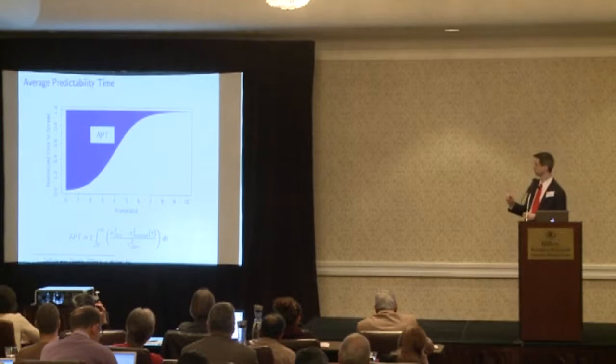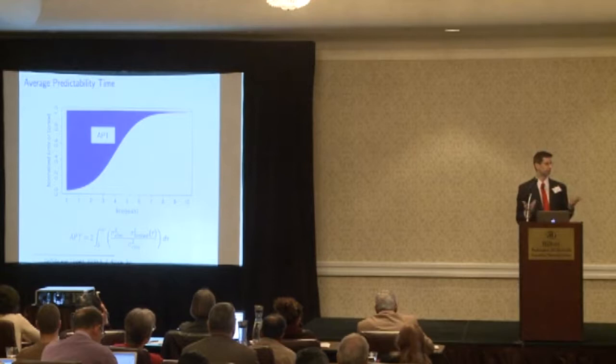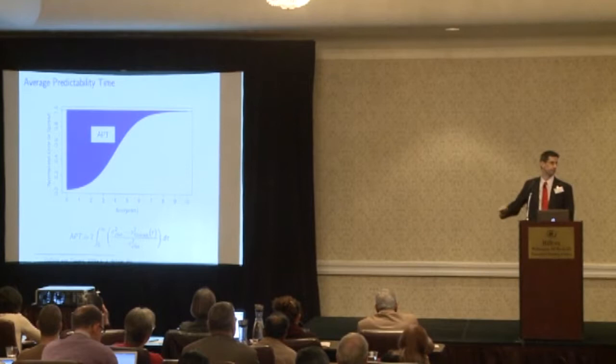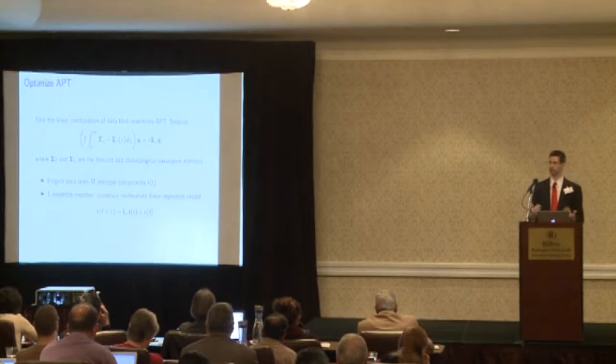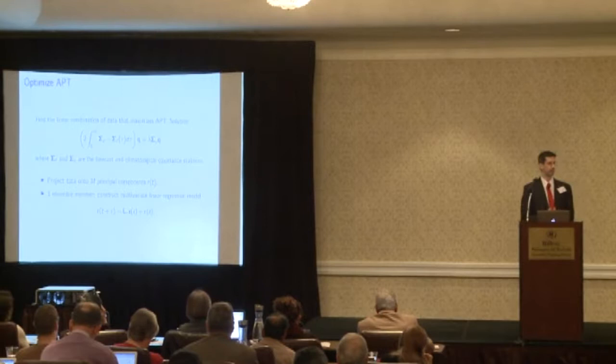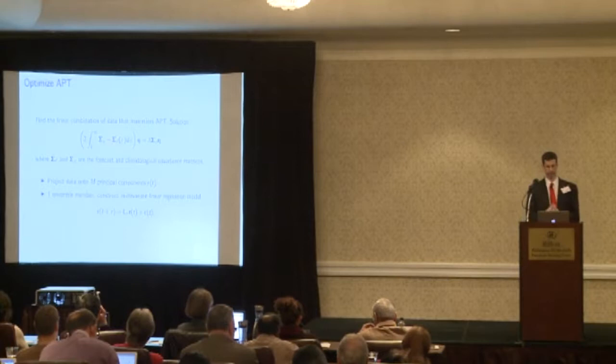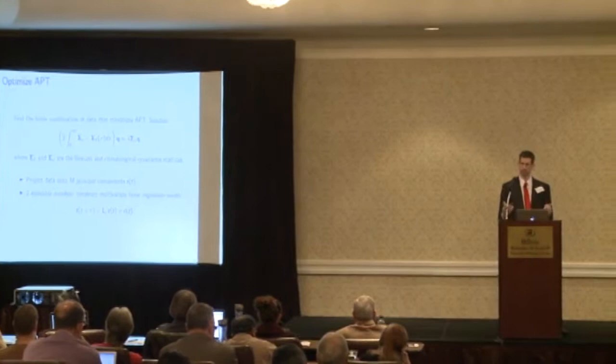Since predictability is a ratio and therefore dimensionless, when you integrate it you get something with units of time. I ended up calling that Average Predictability Time, or APT. If the error grew exponentially, you'd get an e-folding time scale, which is a reasonable way to characterize predictability. Given this measure APT, you can maximize it to find the most predictable components. This reduces to a generalized eigenvalue problem, and after solving it you completely decompose your dataset in terms of predictable components — getting the patterns, the time series, and the predictability all at once.